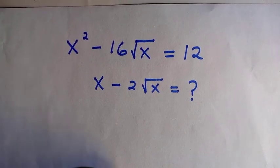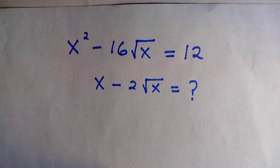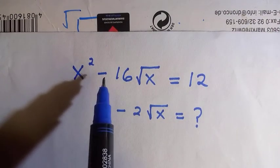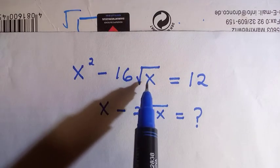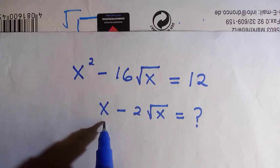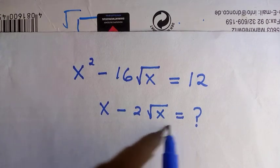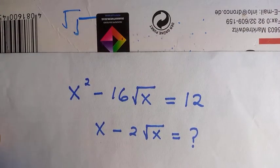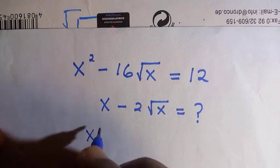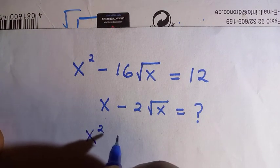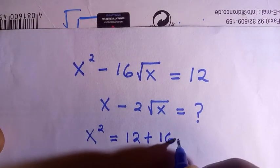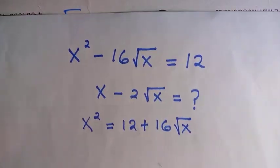Welcome to another video. In this system of equations, we want to solve for x minus 2√x, given that x² minus 16√x equals 12. Let's start by transferring 16√x to the other side, so we get x² equals 12 plus 16√x.